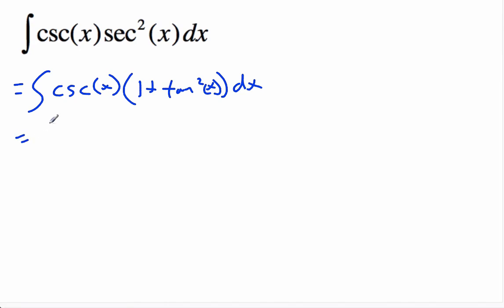Okay, once we do that, we get something that we can integrate. Alright, we've got cosecant x plus cosecant x tan squared x dx.